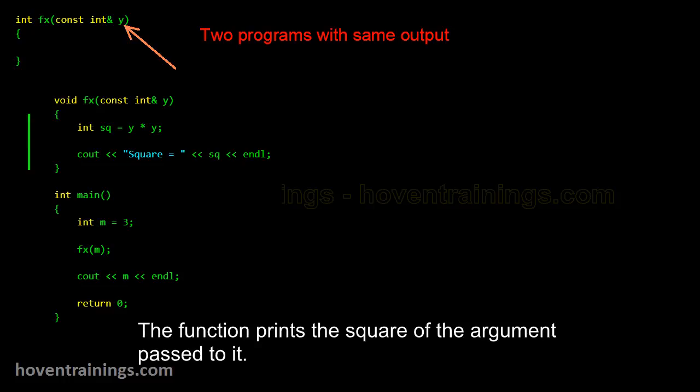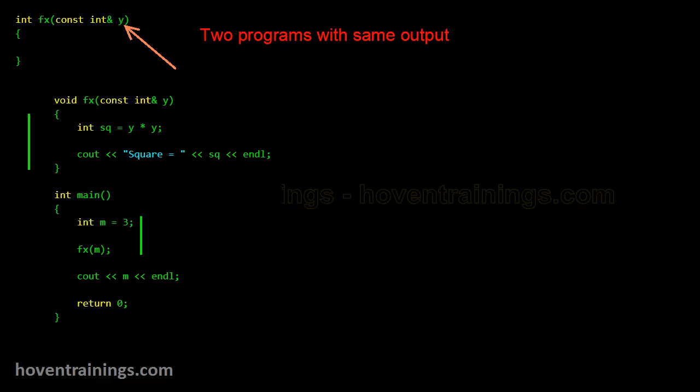The function prints the square of the argument passed to it. The argument m is passed as a constant reference.